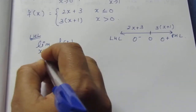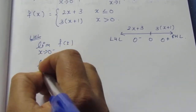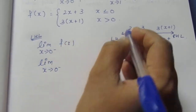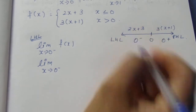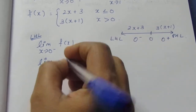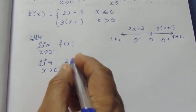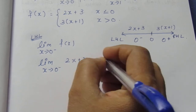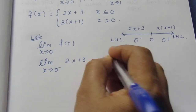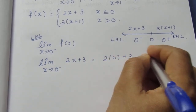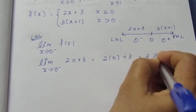For the left-hand limit, limit x tends to 0 negative of f(x): since x is approaching 0 from the left, we use f(x) equals 2x plus 3. Substituting x equals 0, we get 2 times 0 plus 3, which equals 3.